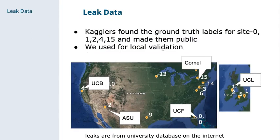An important component of this competition was leak data. Unfortunately, some of the ground truth labels were available online. But luckily, the leaks were made public by other Kagglers and they were excluded from the final private test set. We ended up using the leak data as a holdout set for local validation.